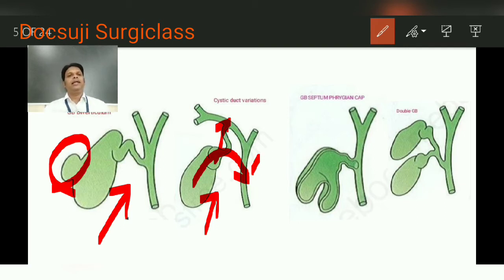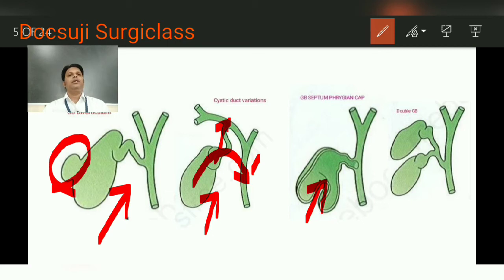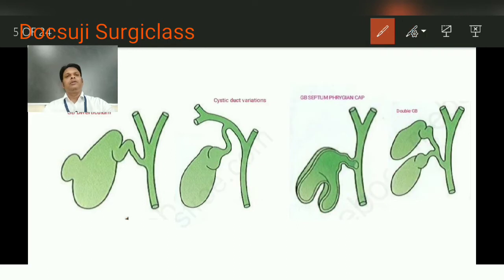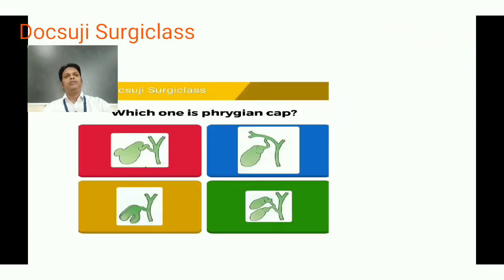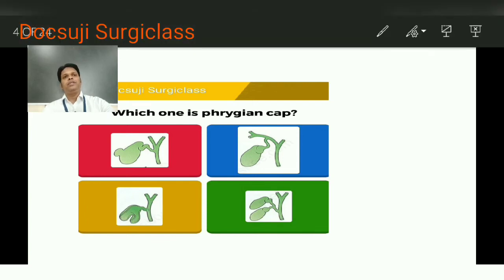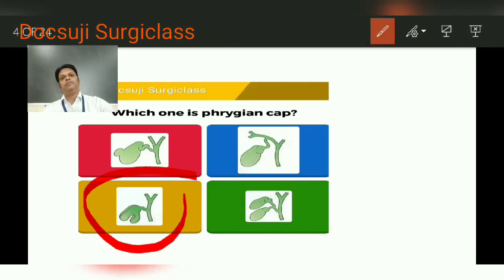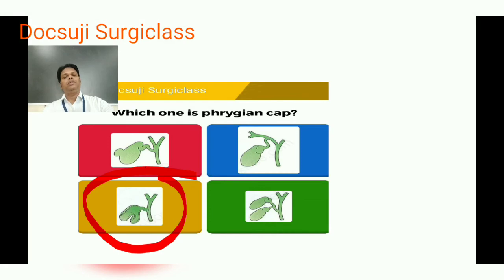The third picture shows a gallbladder septum — there is a septum in the gallbladder wall. This anomaly is called the Phrygian cap, because the people of Phrygia used to wear this type of cap. The fourth picture shows a double gallbladder with a single cystic duct. All others are ruled out, and the answer for Phrygian cap is the gallbladder septum.